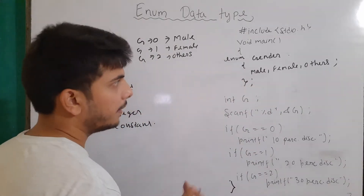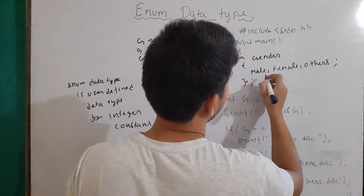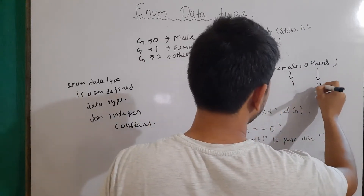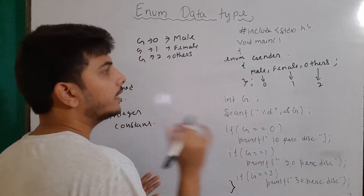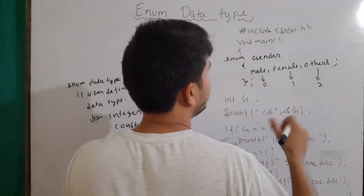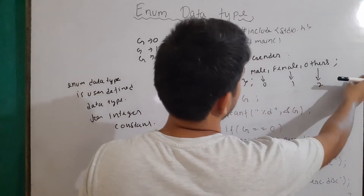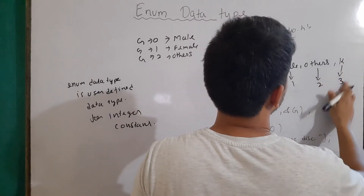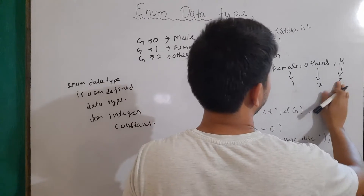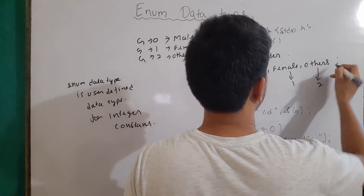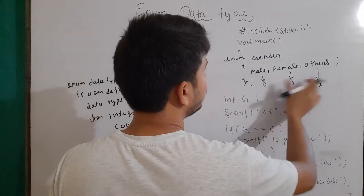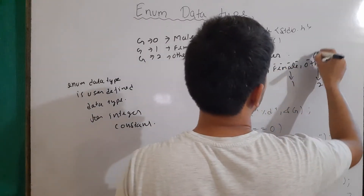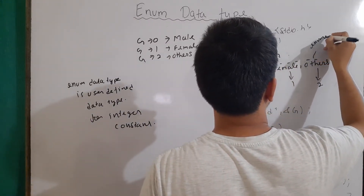What will the compiler do implicitly? It will assign male the value zero, then female with one, and others with two. Basically, it starts giving values from zero up to the number of enumerators that exist. If there is another enumerator, for example k, then it will hold the value three. These values inside the enum are known as the enumerators.